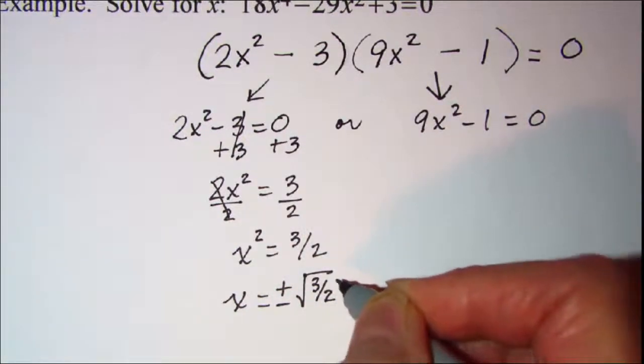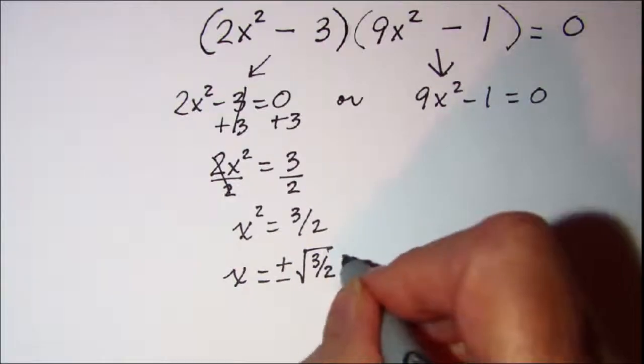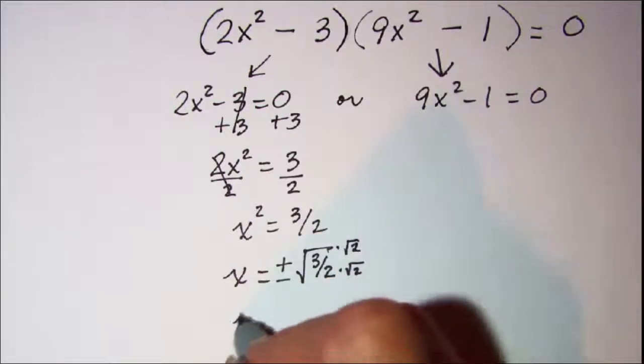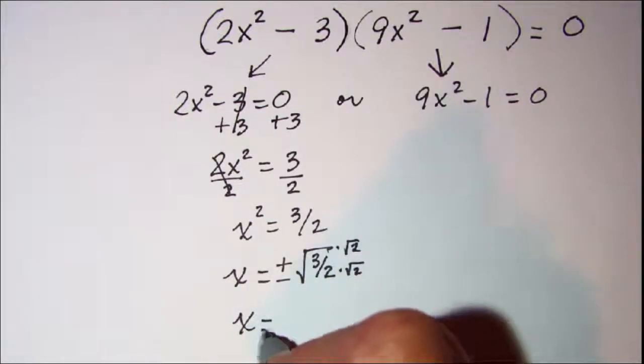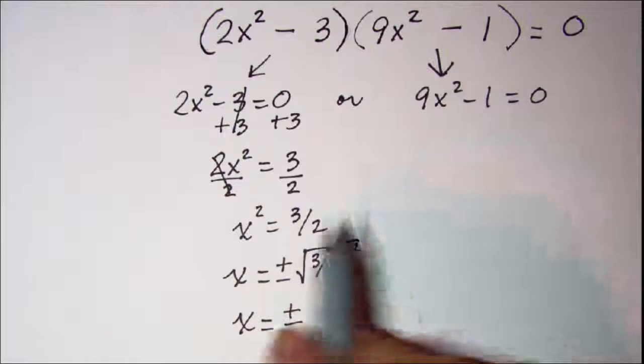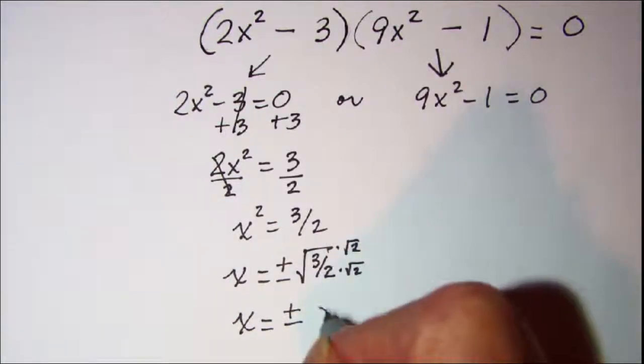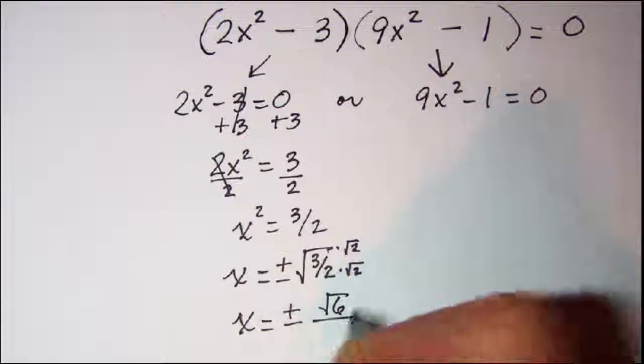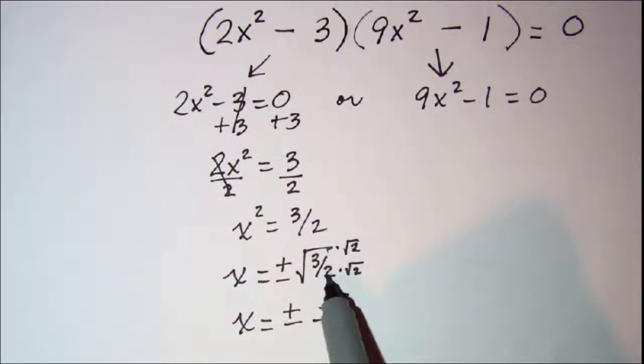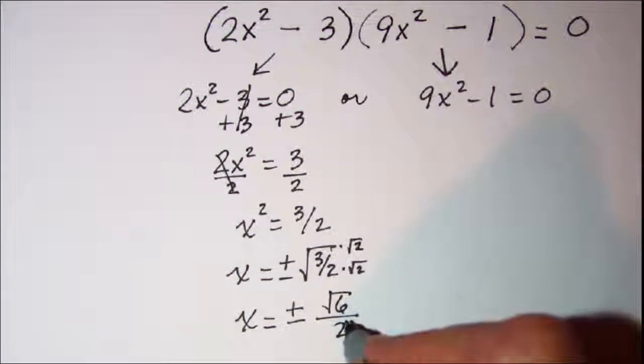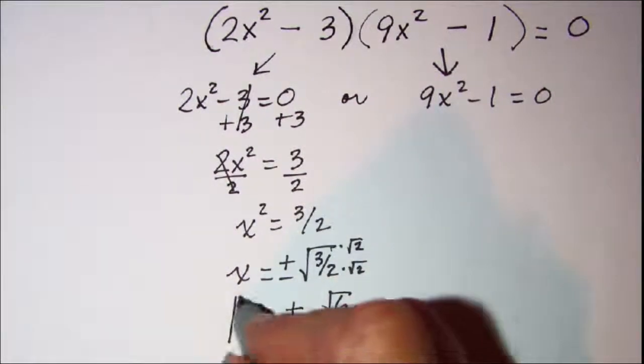Now I need to rationalize this. So I'm going to multiply top and bottom by the square root of 2. And I get x is equal to plus or minus the square root of 3 times square root of 2 is square root of 6. And then in the denominator square root of 2 times square root of 2 is 2. So this is two of my solutions.